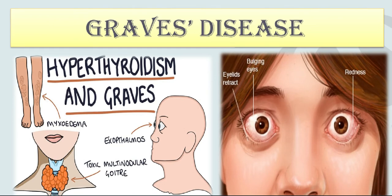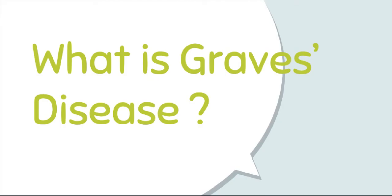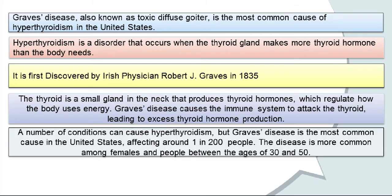Let's take a look at what is Graves' disease. Graves' disease is also known as toxic diffuse goiter. It is the most common cause of hyperthyroidism in the US. In hyperthyroidism, the thyroid gland makes more thyroid hormone than the body needs.